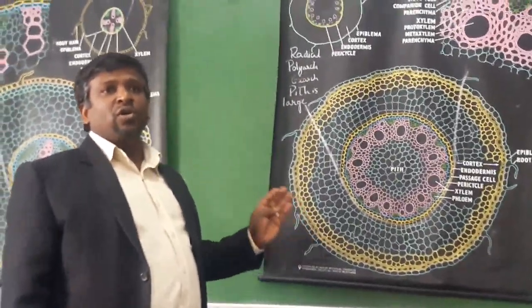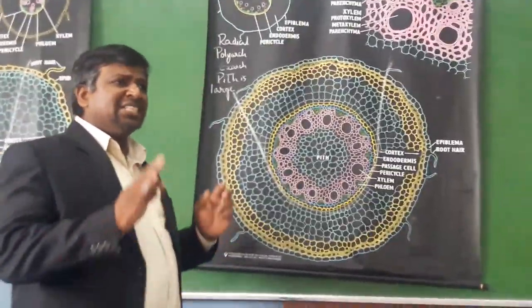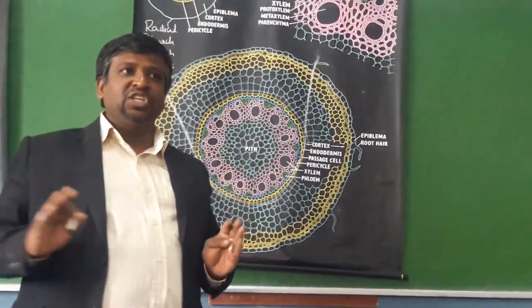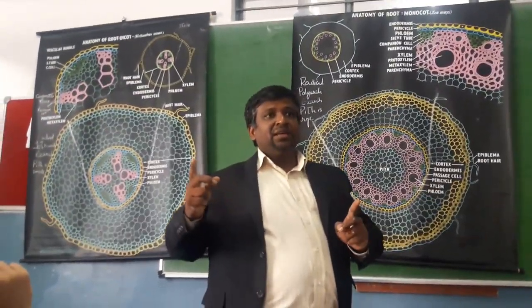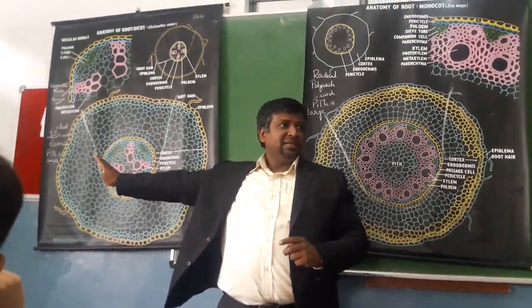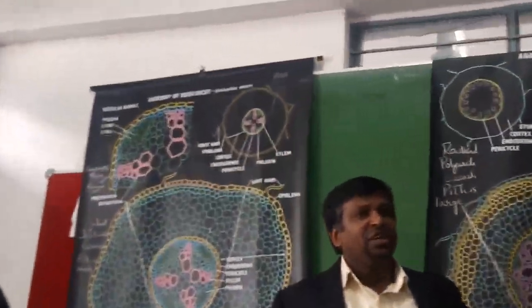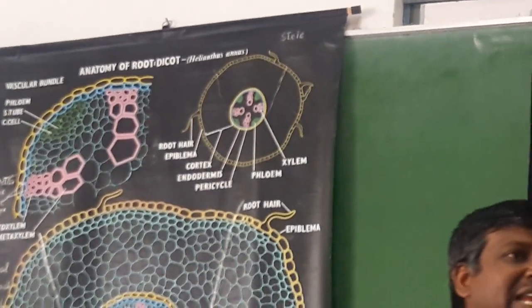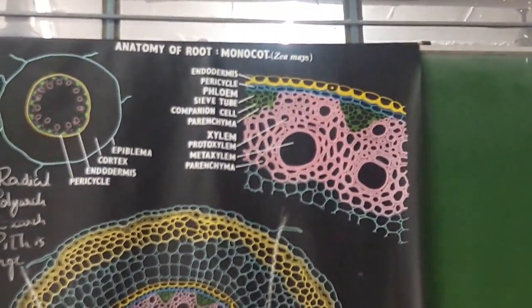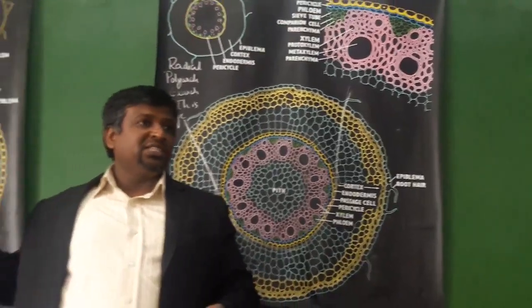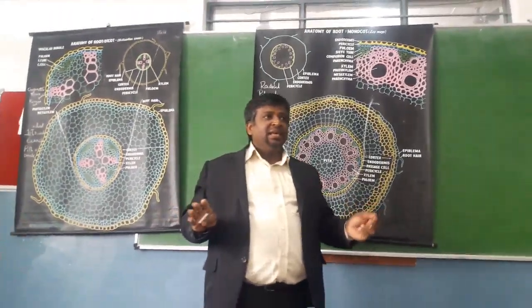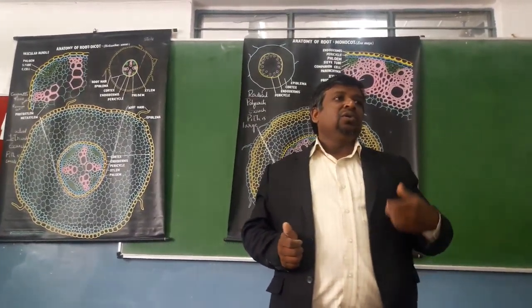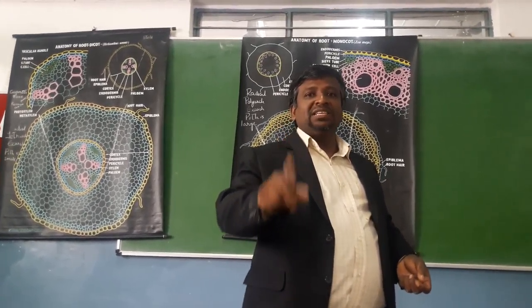The differences between monocot root and dicot root: the stele in dicot root is a radial vascular bundle, tetrarch and exarch, as seen in the example of Helianthus annuus (sunflower). In monocot root, as seen in Zea mays (maize), the stele is also a radial vascular bundle but polyarch with many patches of xylem and phloem. The pith is large in monocot root, whereas in dicot root the pith is small or absent.